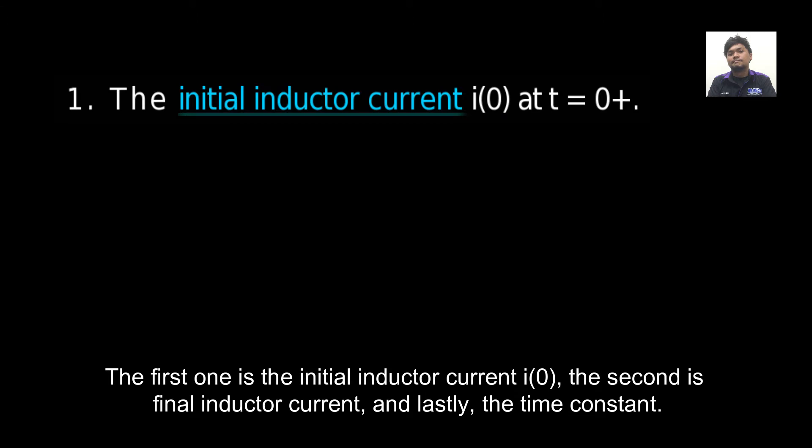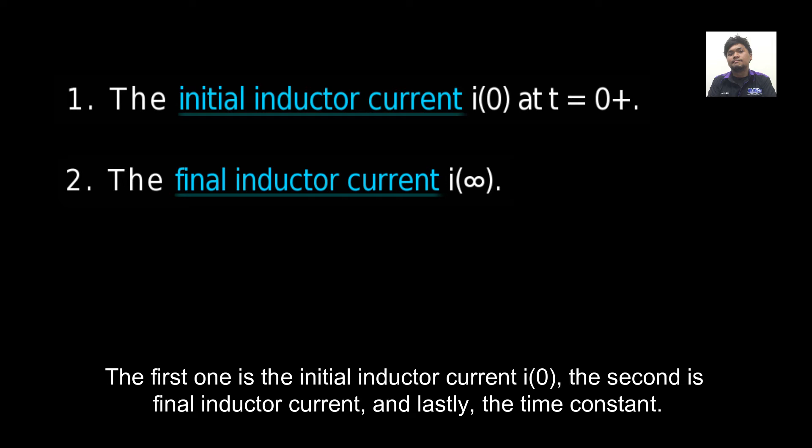The first one is the initial current, i-naught. The second is the final inductor current, i-infinity. And lastly, the time constant, Tau.